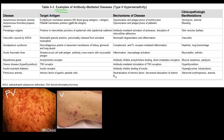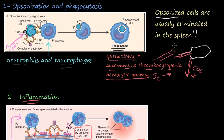The first is autoimmune hemolytic anemia and autoimmune thrombocytopenic purpura. The target antigen is the erythrocyte membrane proteins, the Rh blood group antigens, type 1 antigen, and the platelet membrane. It undergoes opsonization and phagocytosis of erythrocytes and platelets. Clinical manifestations are hemolysis, anemia, and bleeding. IgG attaches to the membrane protein, complement activation hooks onto these antibodies, activating the complement pathway, then phagocytosis by neutrophils and macrophages.